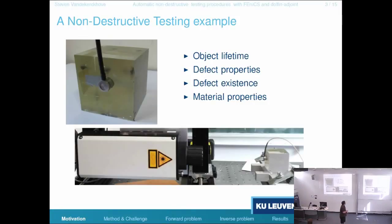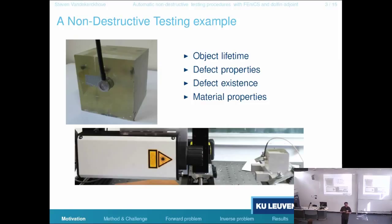I've put this object here. It's a plexiglass cube, three by three centimeters in every direction. There's a transducer on it, so this thing emits a signal. It creates a wave, and then with this vibrometer, we can measure very, very small displacements on the boundaries of this object. What do we want to do? We want to test this object to see whether or not it is intact. How long will it last in the end?